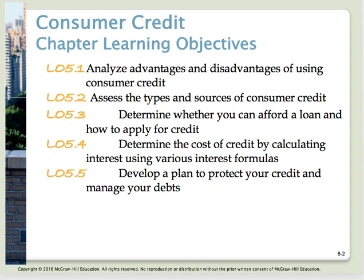Objective number three is to determine whether you can afford a loan and how to apply for credit. Two general rules of thumb for measuring credit capacity are the debt payments to income ratio and the debt to equity ratio. In reviewing your creditworthiness, a creditor seeks information from one of the three national credit bureaus. Objective number four is to determine the cost of credit by calculating interest using various interest formulas, comparing the finance charge and the APR to help you shop for credit.